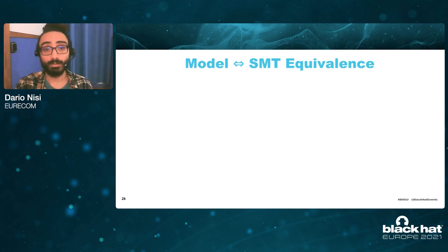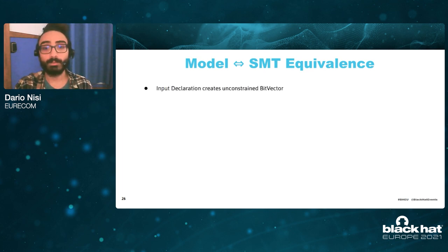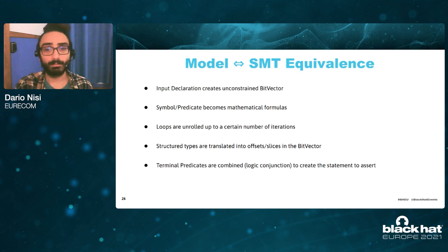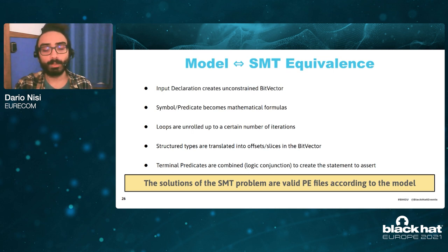Let's have a look at the translation phase between models and SMT problems. The translation phase is based on the equivalence between each type of statement in our language and statements in an SMT problem. Input declaration statements are translated into new unconstrained bit vectors. Symbols and predicates become new mathematical formulas to which we give mnemonic names. We handle loops by unrolling them up to a certain number of iterations, and we translate structured types into offsets and slices in the original bit vector. Once the translation is finished, we take all the terminal predicates and combine them together in a logic conjunction. This creates the statement that the SMT solver needs to assert in order to solve the problem — the solutions of which are PE files that are valid according to the model.